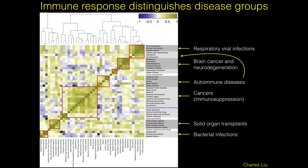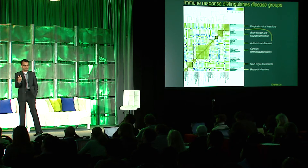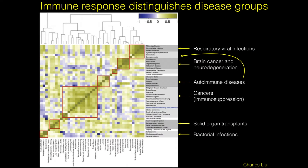There was another group of autoimmune diseases that looked very similar. Cancers were in their own category. But what was really interesting, highlighted in blue, is HIV. HIV didn't cluster with viral infections — it clustered with cancer, because both are immunosuppressive. We know cancer suppresses immune response through PD-L1 and PD-L2. Another cluster was organ transplant — heart, lung, liver, kidney — they all clustered together. And then bacterial infections were separate from viral infections. The biggest component that fell out across all diseases was immune response.